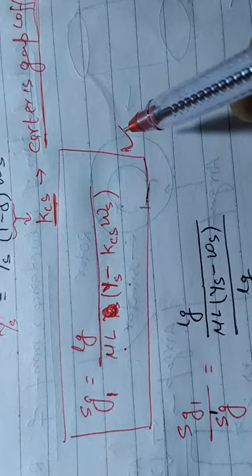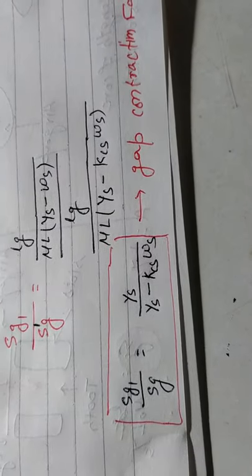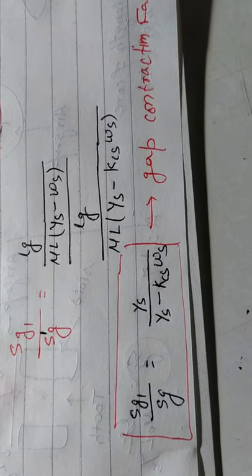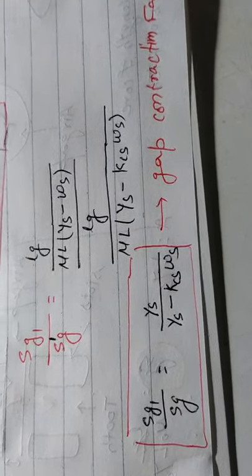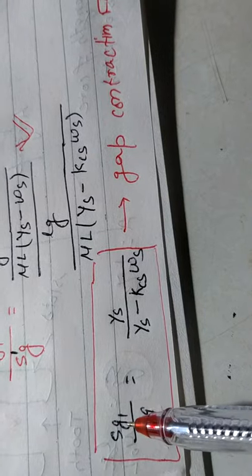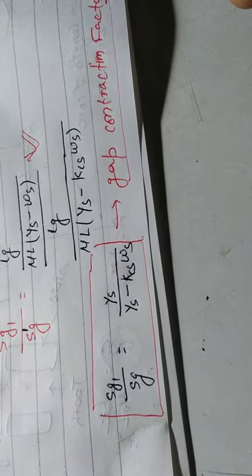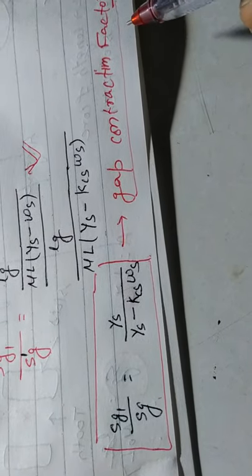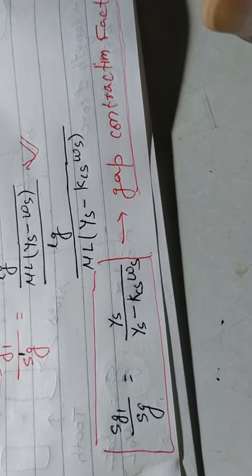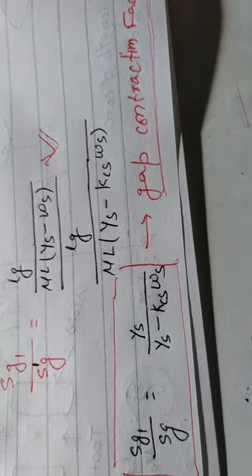We have calculated reluctance in three cases: simple case, slotted armature, and slotted armature with flux fringing. Dividing these expressions gives the gap contraction factor, also an important parameter for electrical machine design and commonly asked in semester exams. You should prepare these parameters — Carter's gap coefficient and gap contraction factor — for your examination.